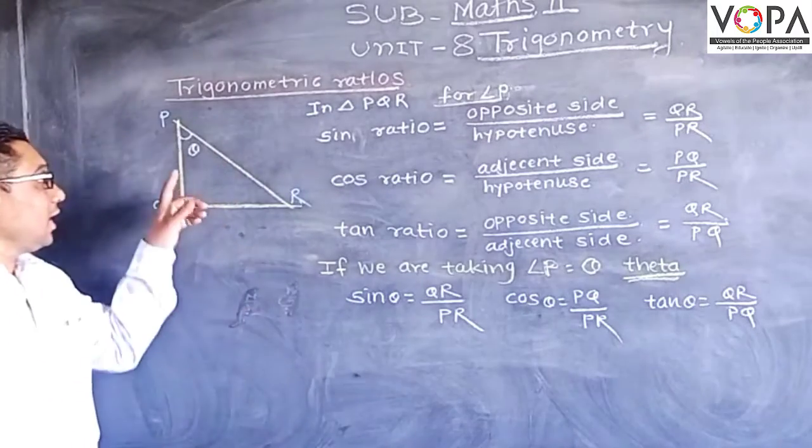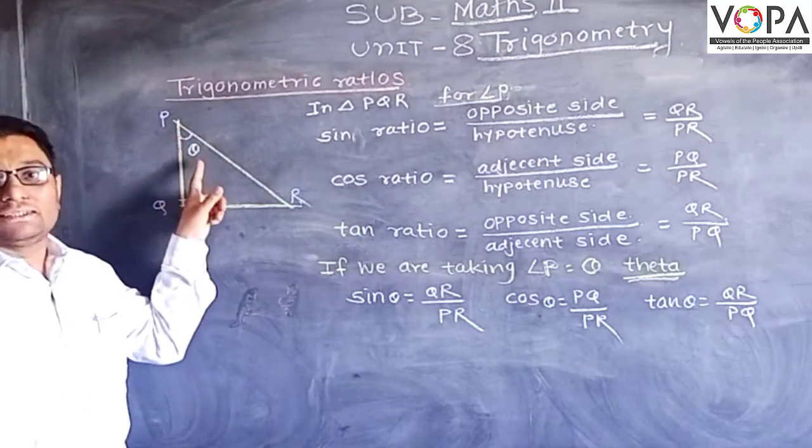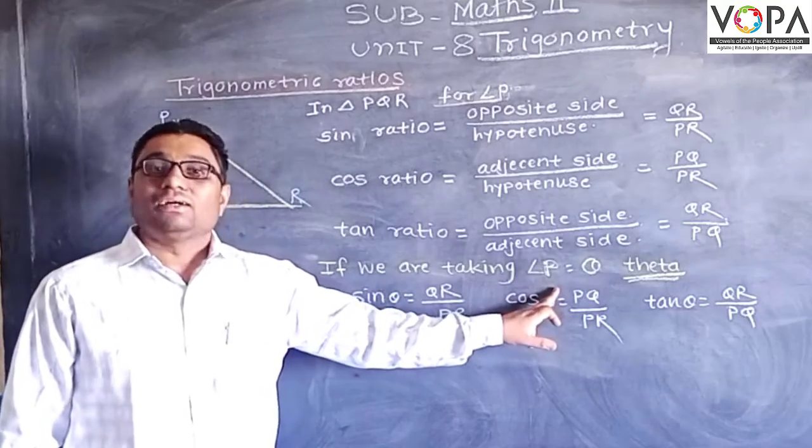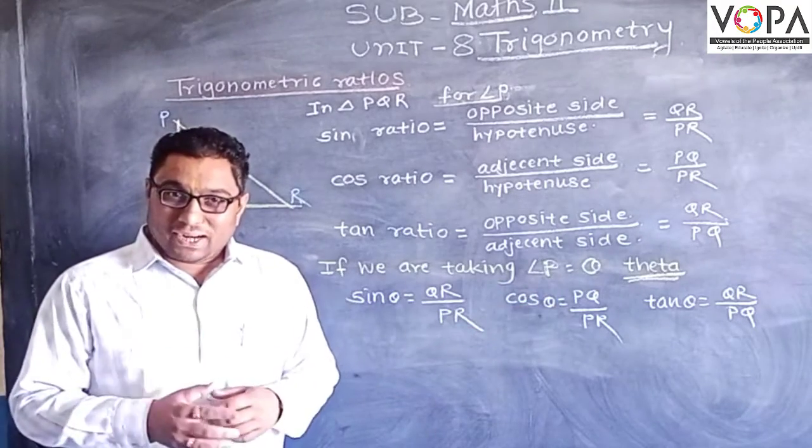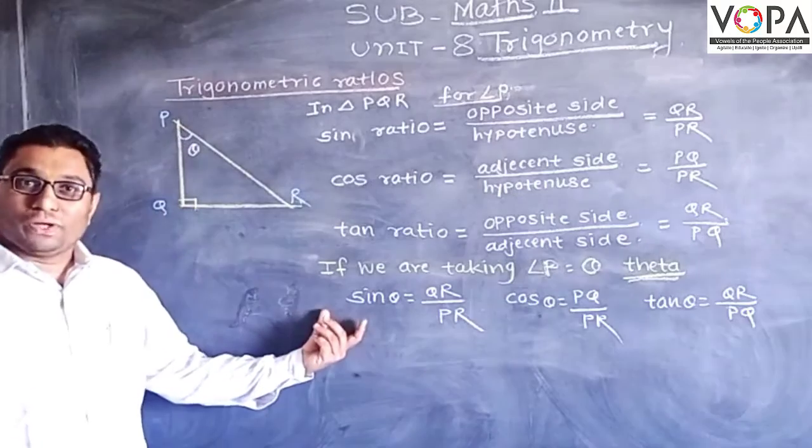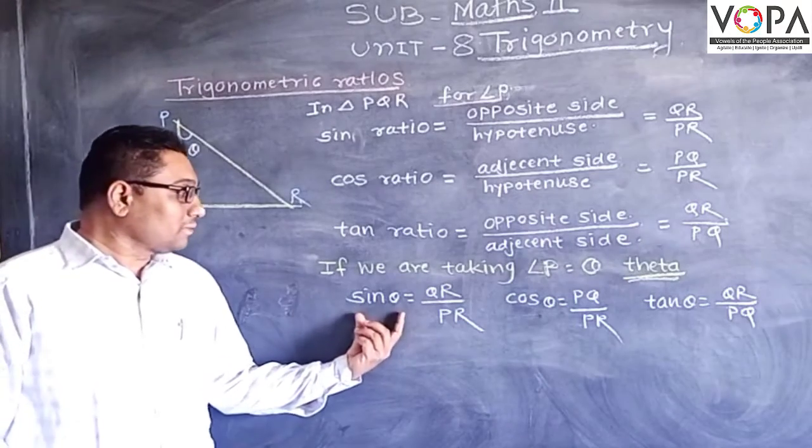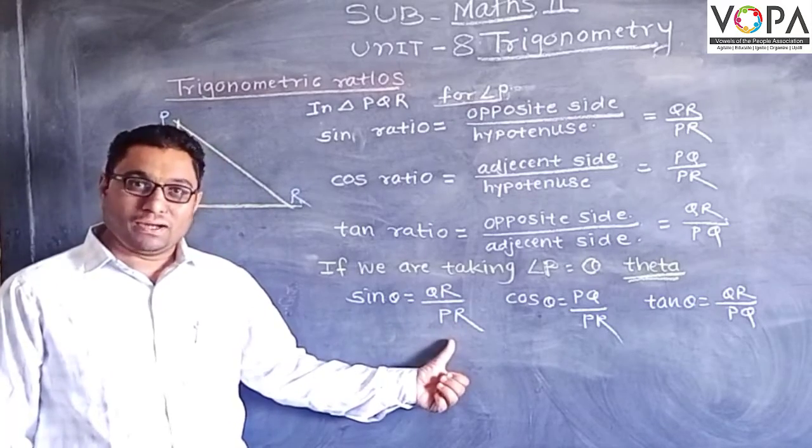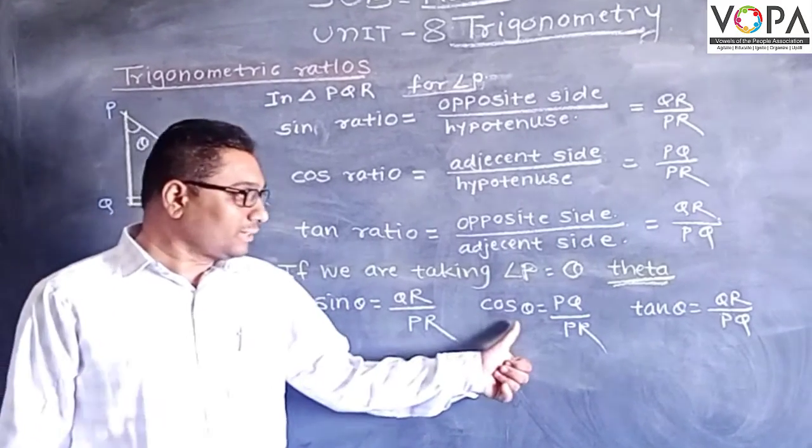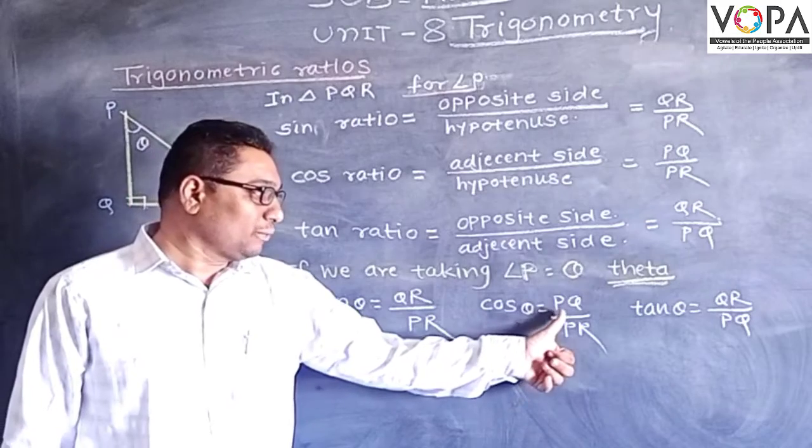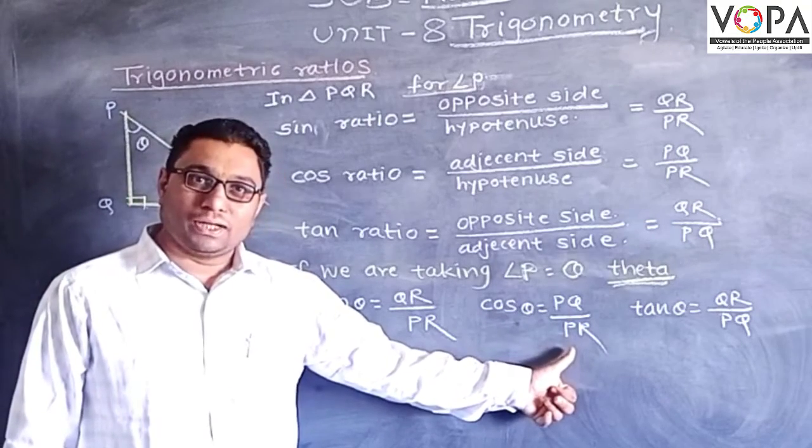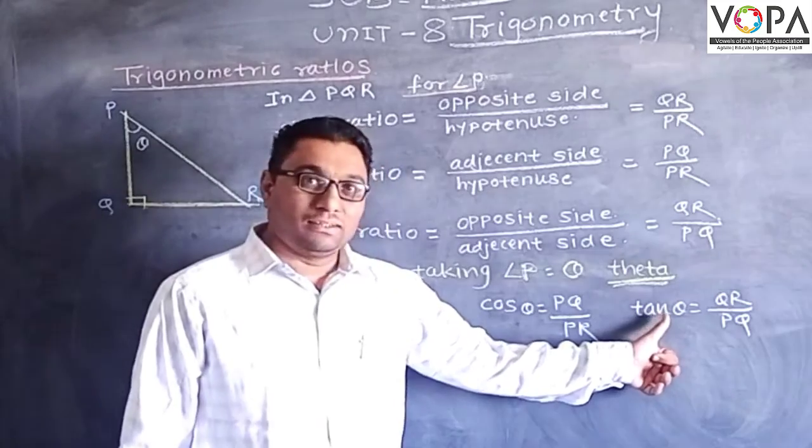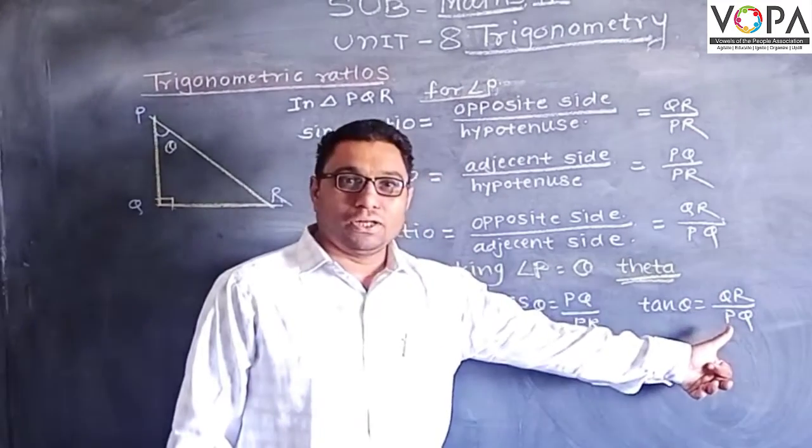If we take angle P as theta, which is one of the Greek letters, then we can write these ratios as: sine theta equals QR upon PR, cosine theta equals PQ upon PR, and tangent theta equals QR upon PQ. Thank you.